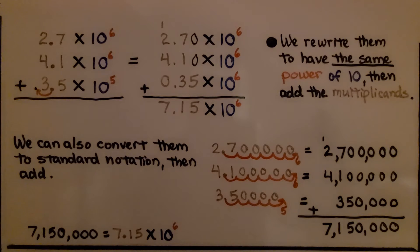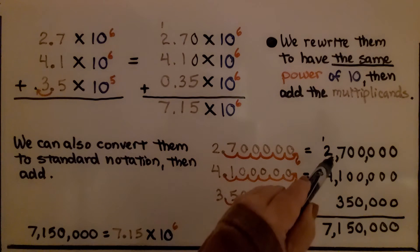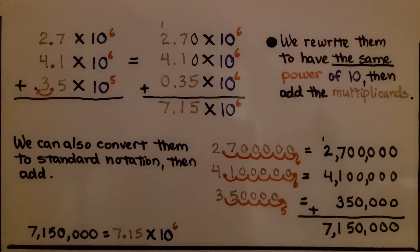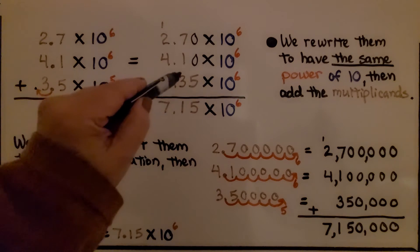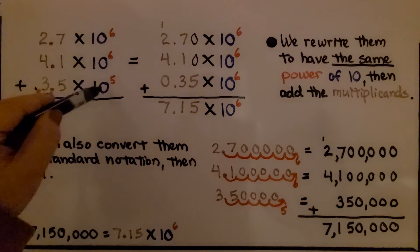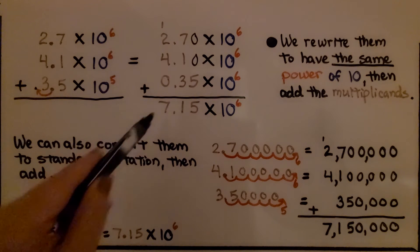We rewrite them to have the same power of 10, then add the multiplicands. We can also convert to standard notation: 2.7 times 10 to the sixth is 2,700,000; 4.1 times 10 to the sixth is 4,100,000; and 3.5 times 10 to the fifth is 350,000. Adding them all gives 7,150,000, which equals 7.15 times 10 to the sixth.